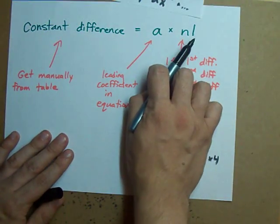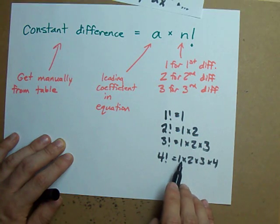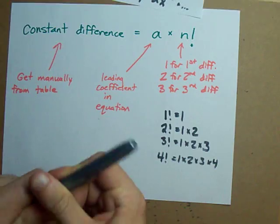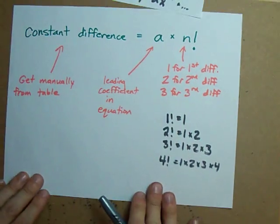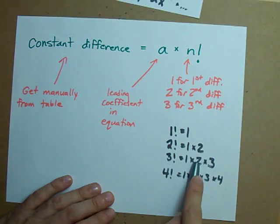This factorial means take that number and multiply it by every single number lower than it down to 1. It's just a mathematical trick that happens to work. You'll notice that 3 factorial is 1 times 2 times 3, that's 6.